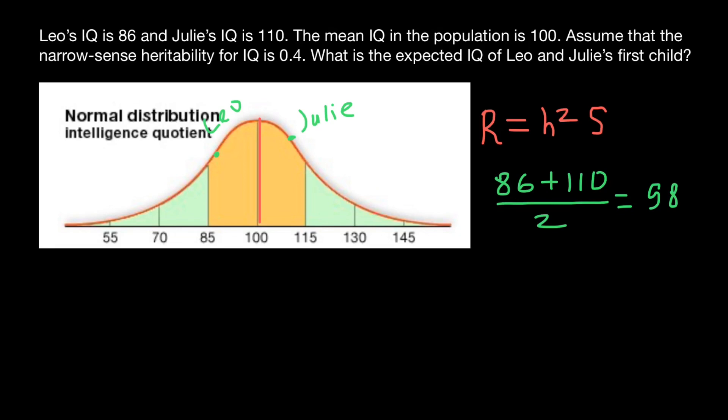So this mean is going to be somewhere here. This is the mean of the selected parents, which is slightly less than mean of the base population.